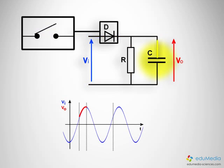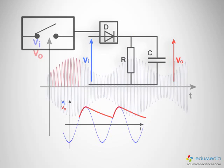When the diode is reverse biased, the capacitor discharges into the resistance. The output voltage V0 decreases with a slope that depends on the time constant RC.